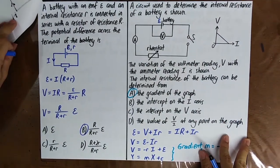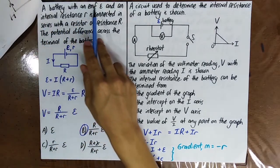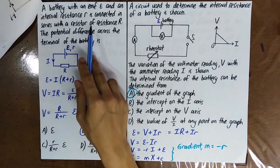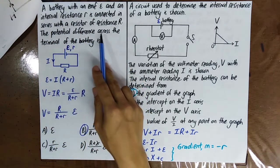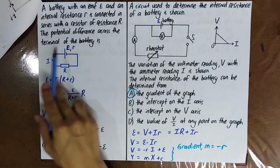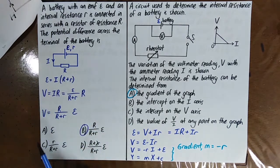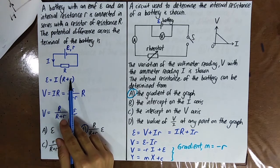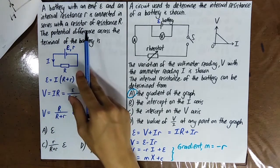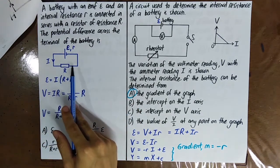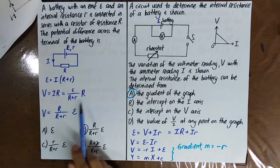A battery with EMF E and internal resistance r is connected in series with a resistor of resistance R. The potential difference across the terminal of the battery is found by first calculating the current: I equals E over (R plus r). Then the potential difference V equals IR, giving the terminal voltage as a fraction of the EMF.